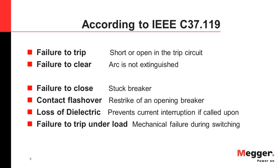The second category for Breaker Failure is Failure to Clear, which means your tripping coil is energized, your breaker is opening, and your 52A contacts get picked up. So you can see everything happening, but the arc is not extinguished — the arc is still there. That is also a Breaker Failure, called Failure to Clear.